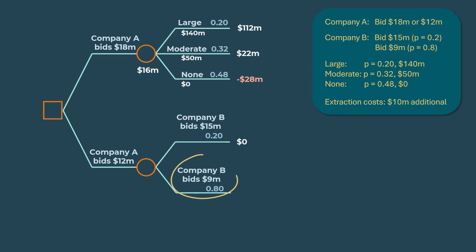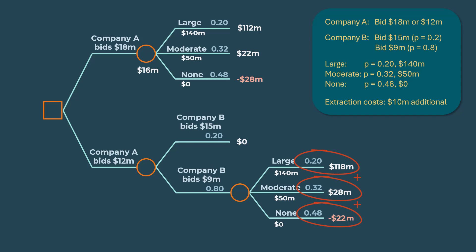If Company B bids $9 million, Company A will win the bid since they're bidding higher at $12 million. So Company A again will be exposed to the three states of nature we see up here for winning the bid. Company A will now pay $12 million for winning the bid plus the additional $10 million extraction cost, totaling $22 million. The payoff for large will thus be $140 minus 22 which gives $118 million. For moderate, we have $50 minus 22 which gives $28 million. And for none, we have $0 minus 22 which gives negative $22 million. The expected value at this node will be 0.2 times 118 plus 0.32 times 28 plus 0.48 times negative 22, which gives $22 million.